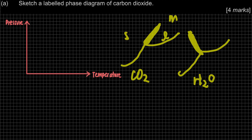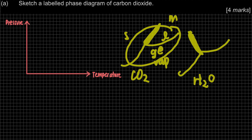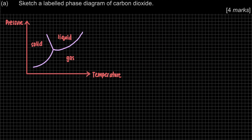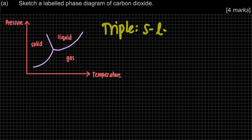There are reasons behind it, but the question does not ask for that. It only asks to sketch a labelled phase diagram of carbon dioxide. So we have to draw the shape and label each of the states: solid, liquid, and here will be gas — or you can also write vapor.